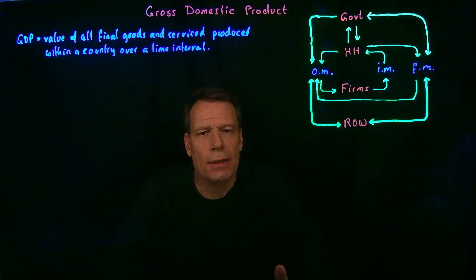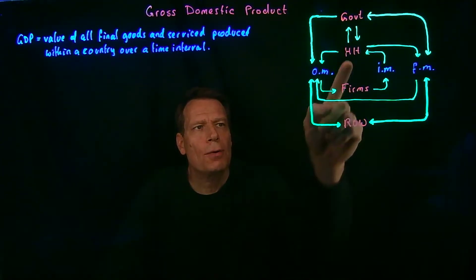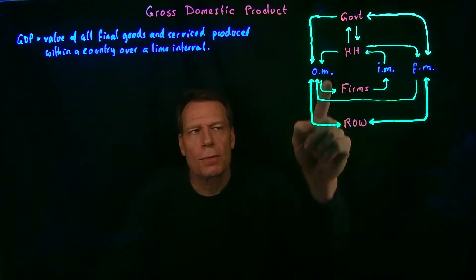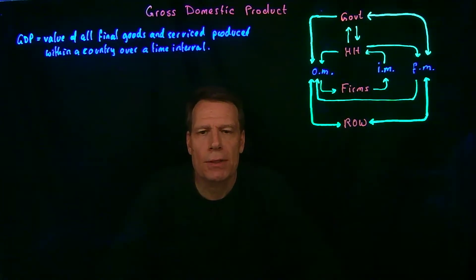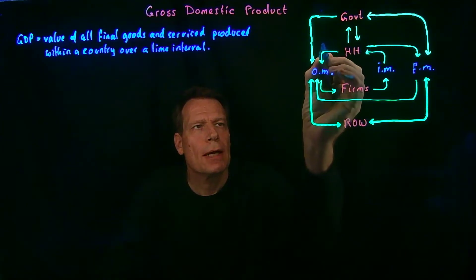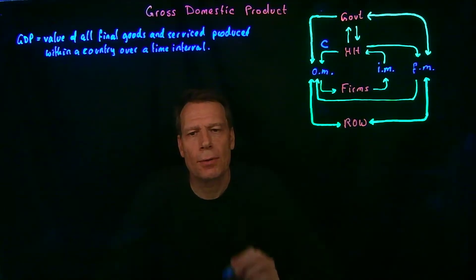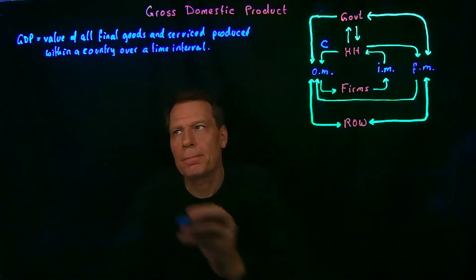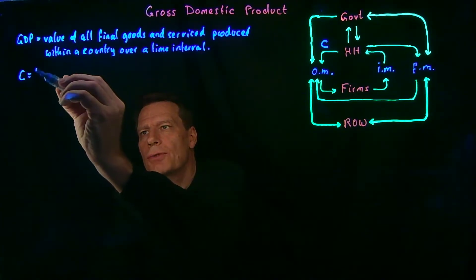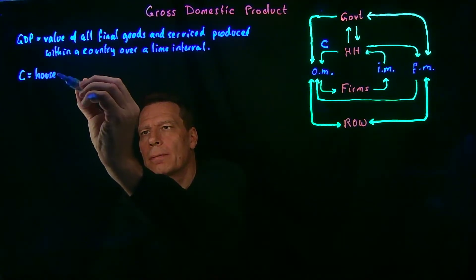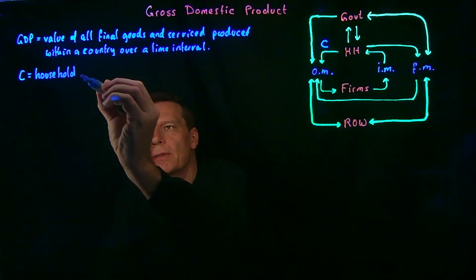So all we have to do to calculate GDP is to add up what households purchase, what firms purchase, what governments purchase, and what the rest of the world purchases. We can begin with households, and we call what households purchase consumption, denoted by C. So C stands for household purchases.